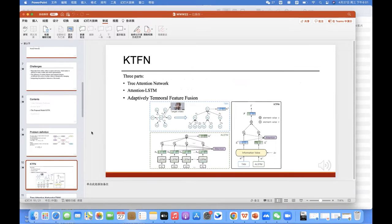The KTFN consists of three components. First, the tree attention network for extracting content features. Second, it is an attention-based LSTM for extracting temporal features. Third, it is an adaptively temporal feature fusion using a learnable exponential decay function. And this is the KTFN framework.